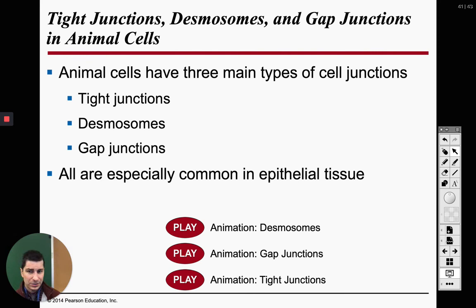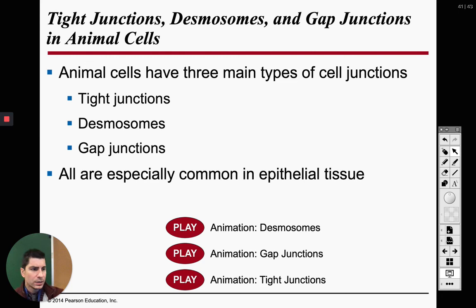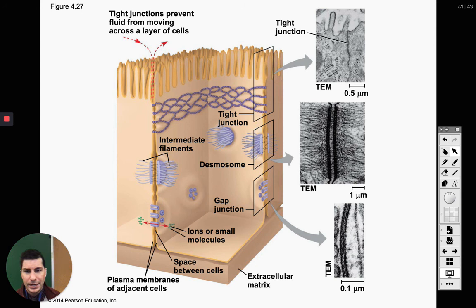The second type is desmosomes — they're almost the same thing as tight junctions and also seal cells together. What these ones do is use intermediate fibers — those filaments — to increase the strength of our tight junctions. This is why muscles won't completely rip apart during use. The last one is gap junctions, which are pretty much the same as plasmodesmata for plants. Gap junctions allow us to transport ions and materials from one cell to another. That's how our proteins get from one cell to another cell.